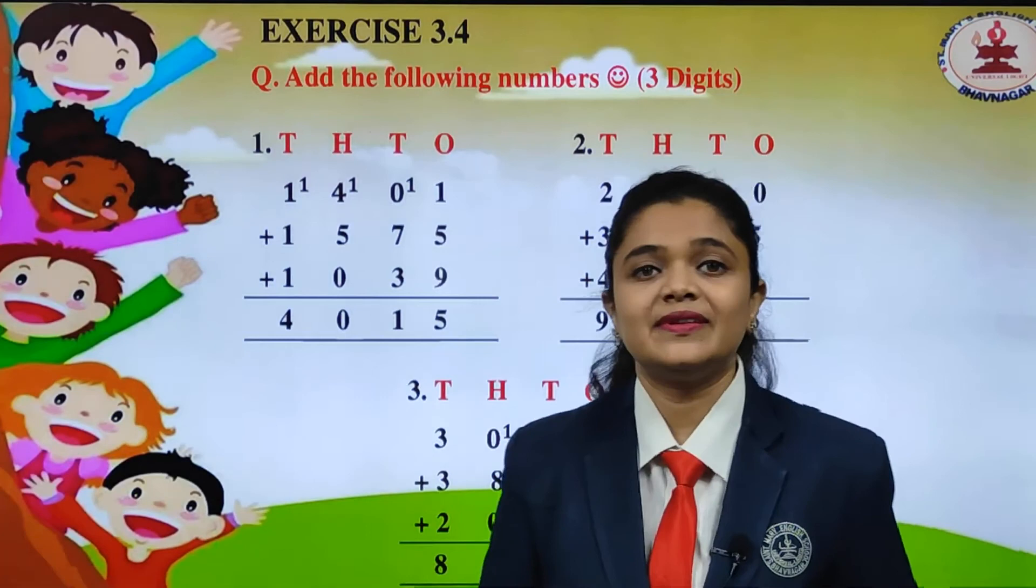So 1 plus 8, 9. Next number that is at thousands place value. 3 plus 3, 6. 6 plus 2, we will get 8. So in short, what will be the answer of our addition? We will get 8975.